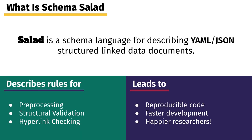Salad is a schema language used to describe structured linked data documents, typically written in YAML or JSON format. It describes rules for preprocessing, like the resolution of imports and inputs embedded within the document, structural validation such as the types allowed for a given field, and hyperlink checking in order to maintain document integrity. This leads to reproducible code, fast development, and happy researchers.